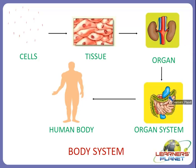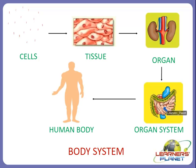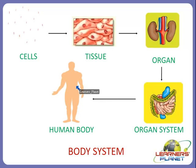Many tissues combine to form an organ, then many organs combine to form an organ system. As you can see here, this is the digestive system, and the digestive system includes the small intestine and large intestine - it is a combination of many organs which combine together to form an organ system. And many organ systems combine to form the human body.